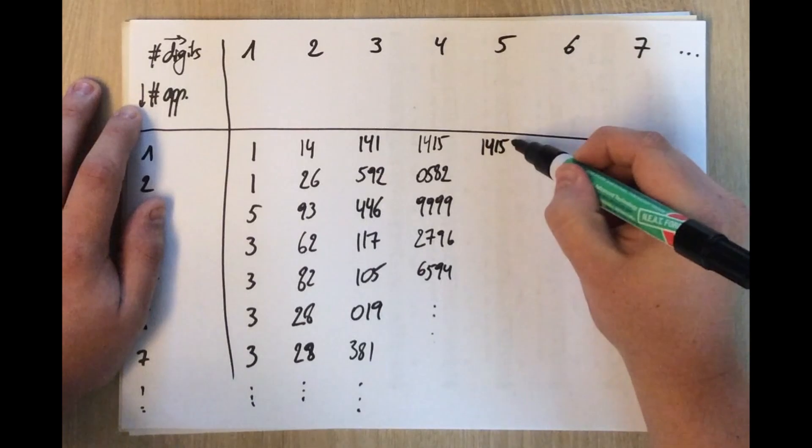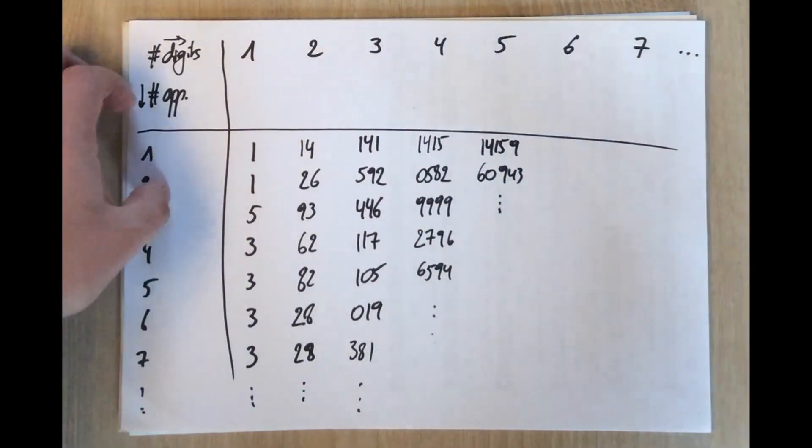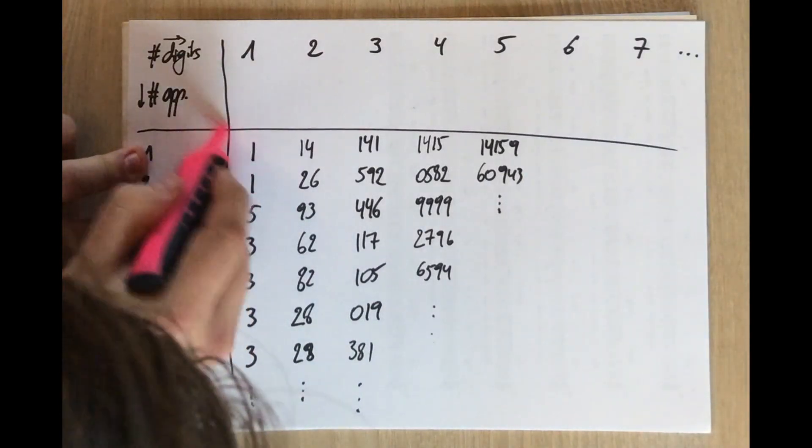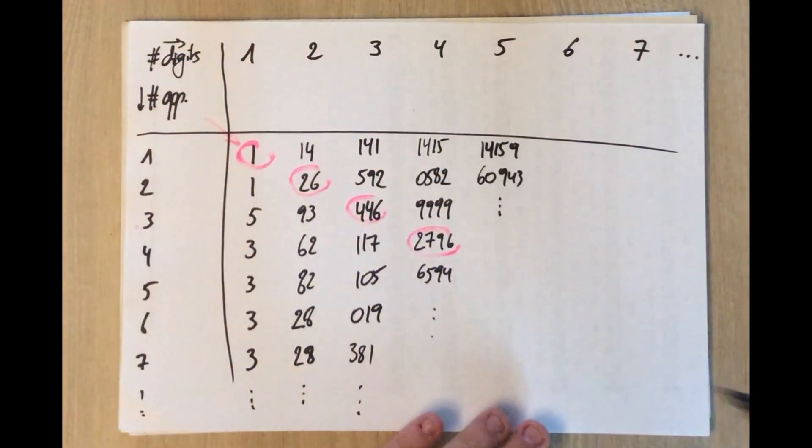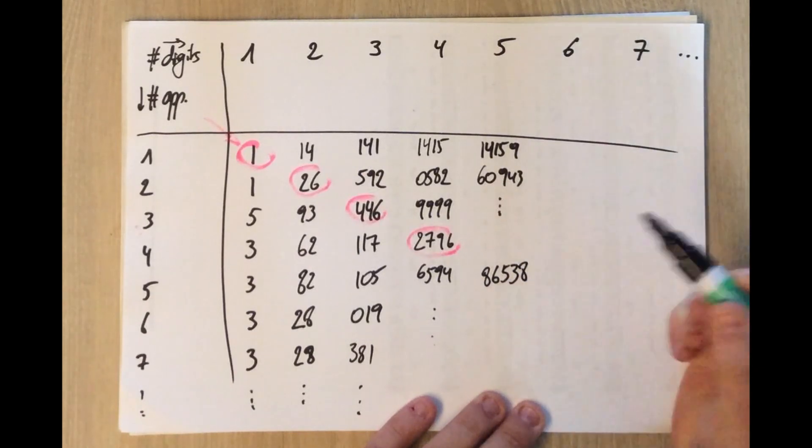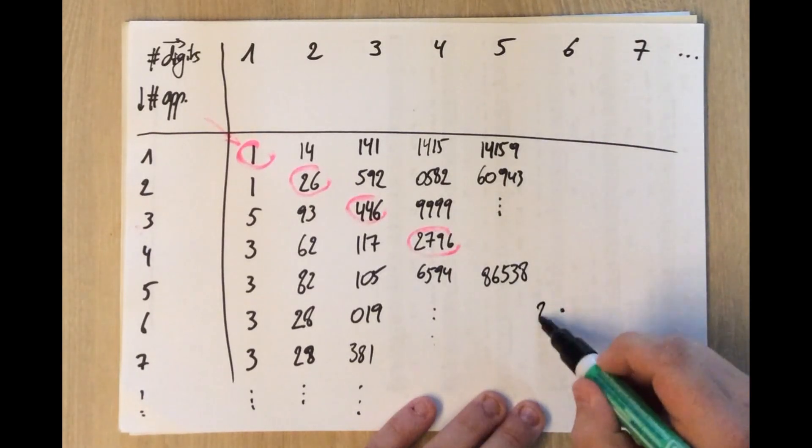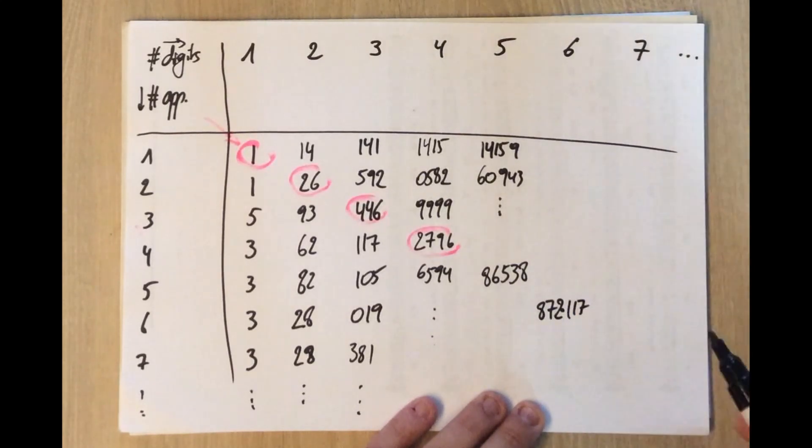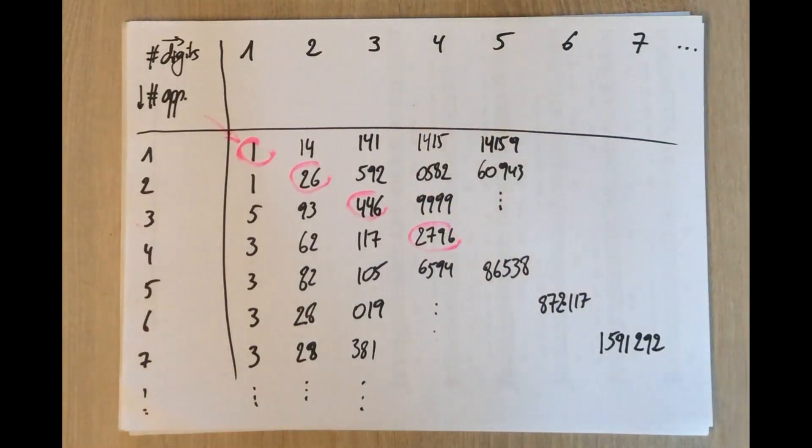Here again, the first five digits, and so on. I'm interested mainly in the diagonal. So the first five-digit number appearing five times turns out to be 86,538. Six-digit number appearing six times is 872,117. And the first seven-digit number appearing seven times in the digits of pi would be 1,591,292.